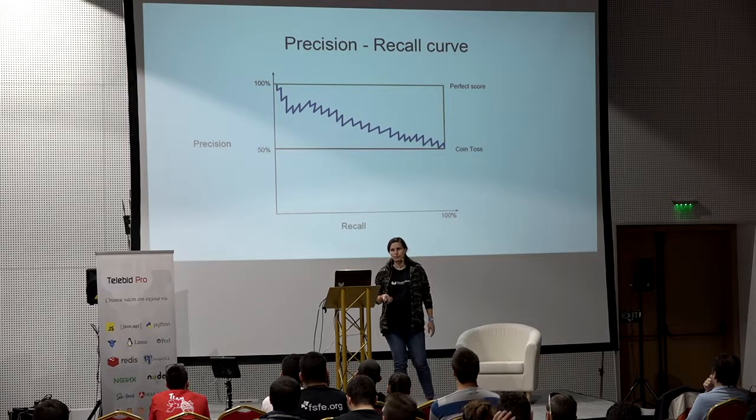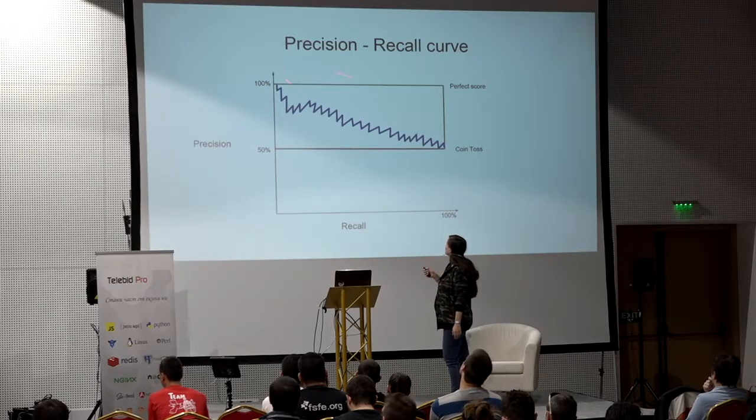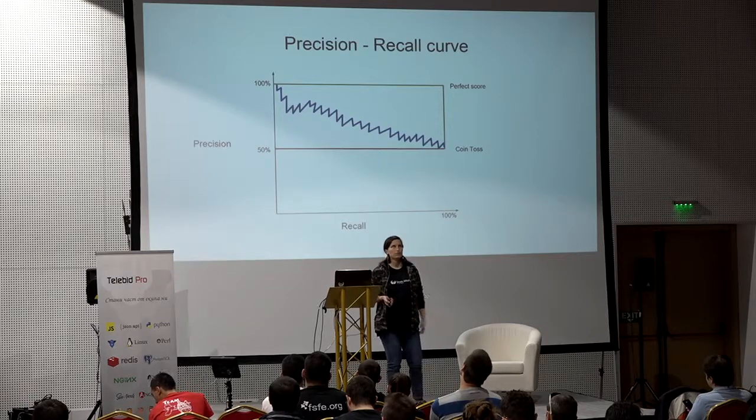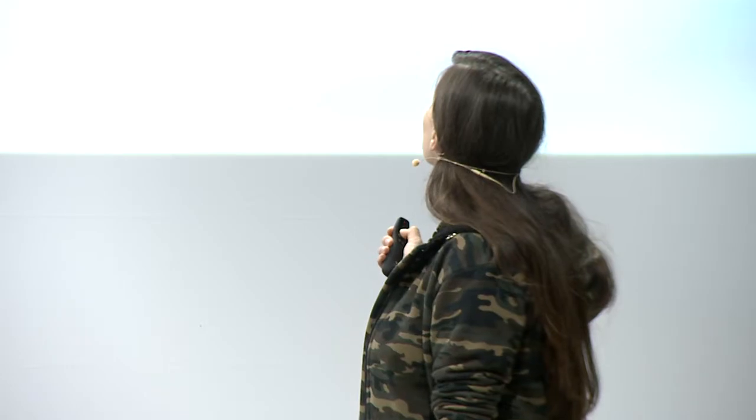The perfect score would look different — the green line at the top corner. A perfect score means that in the beginning you retrieve all slot pictures first, so your precision starts at 100% and stays there until you hit pictures without slots, at which point it drops. It's important to note that positions are not on any axis — you just have corresponding precision and recall points plotted on the graph, which is why it looks a bit different from what you might expect.